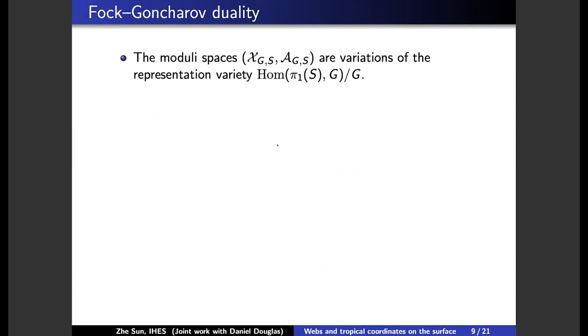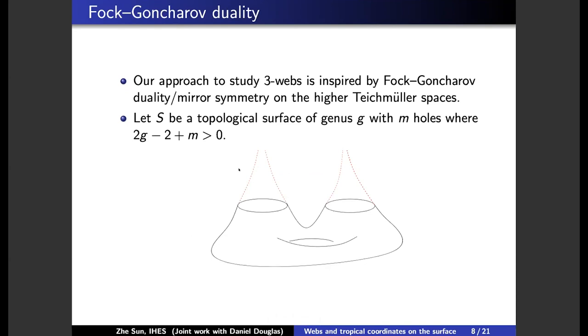So we study the moduli space of two pair of moduli spaces with a variant of the representation variety. The representation variety can be thought of as you have some geometric structure on the surface.